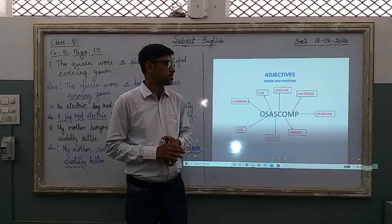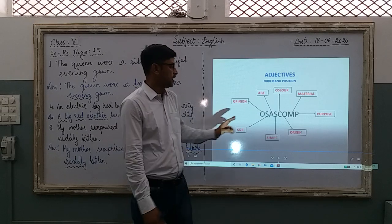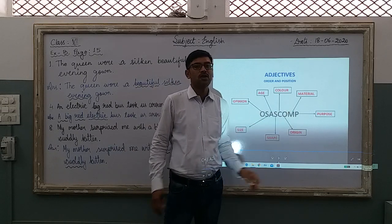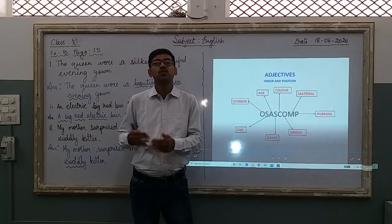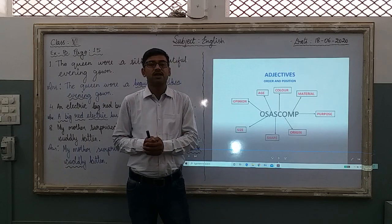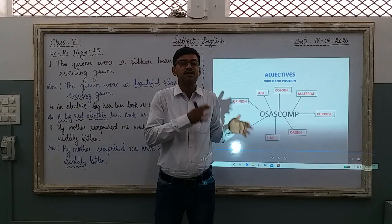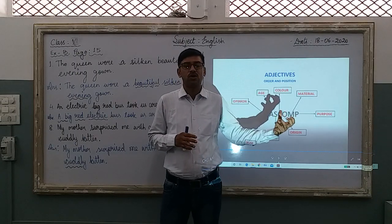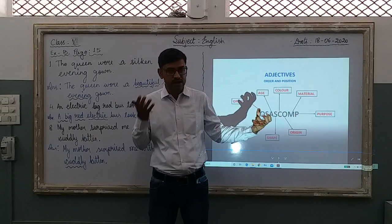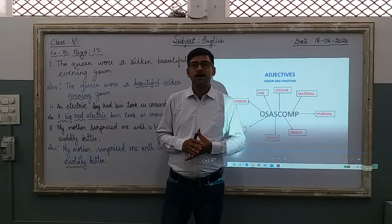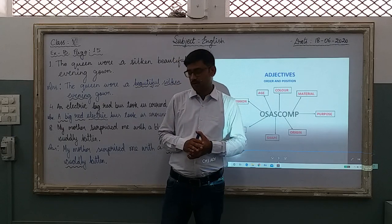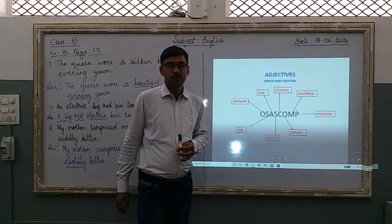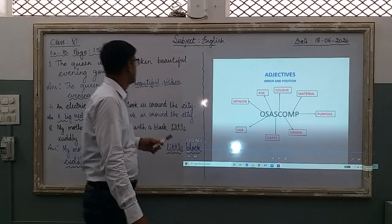You need to learn this sequence, as this is the order in which your adjectives should come into place when you are putting more than one adjective in a sentence to describe the noun. We use adjectives to describe the noun. You have exercises in your book.